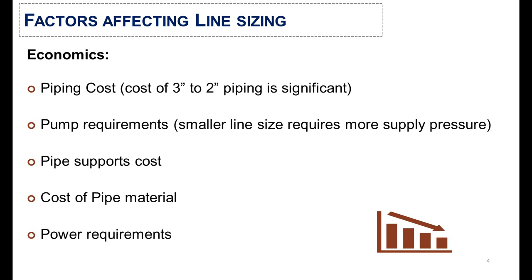For example, if we switch between three to two inch pipe, the cost would be simply significant. Similarly, the pumping requirements mean that the smaller line size requires more supply pressure, so we have to add more pumps. The third cost factor is pipe supports cost, and the fourth is pipe material cost.